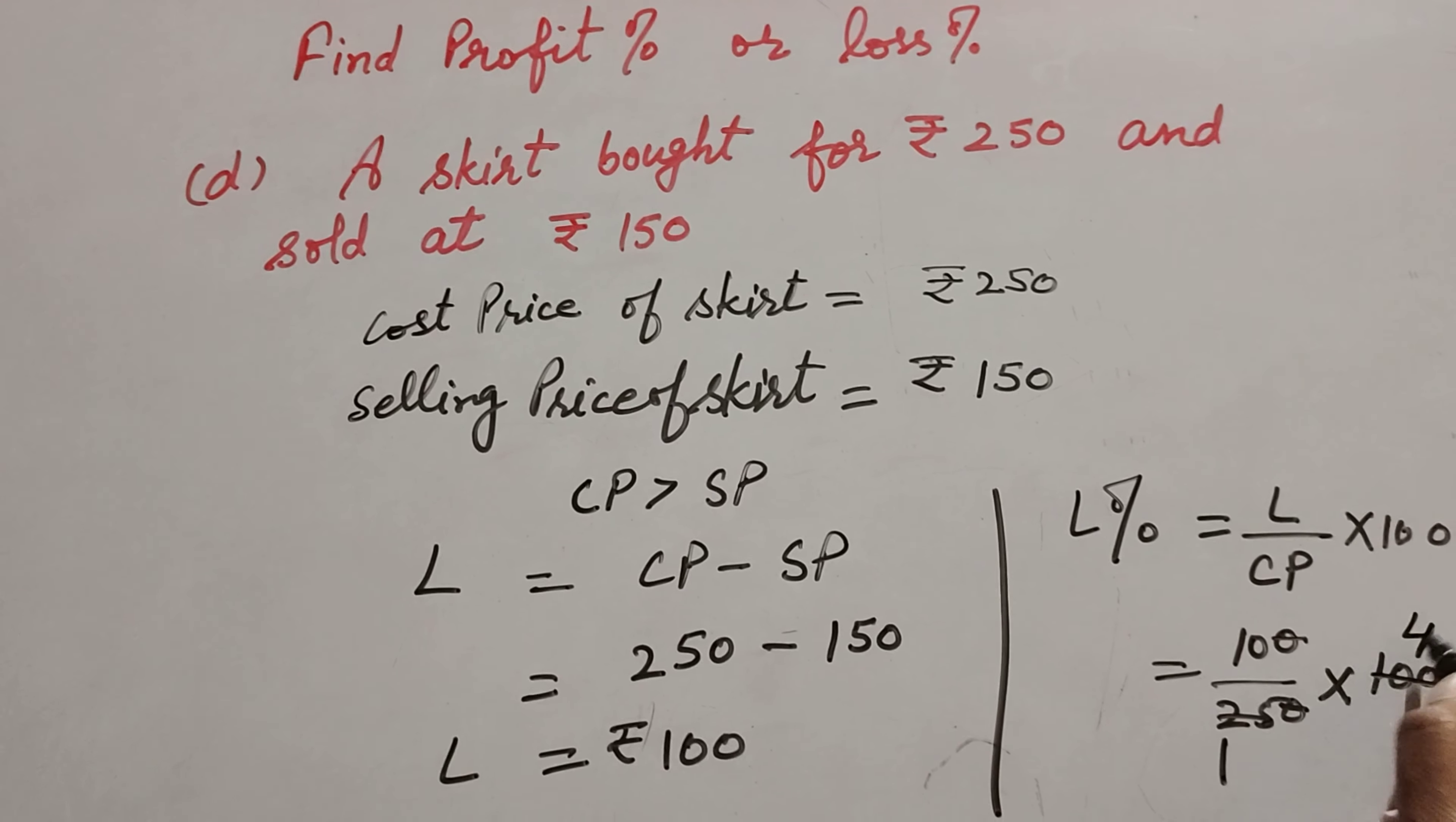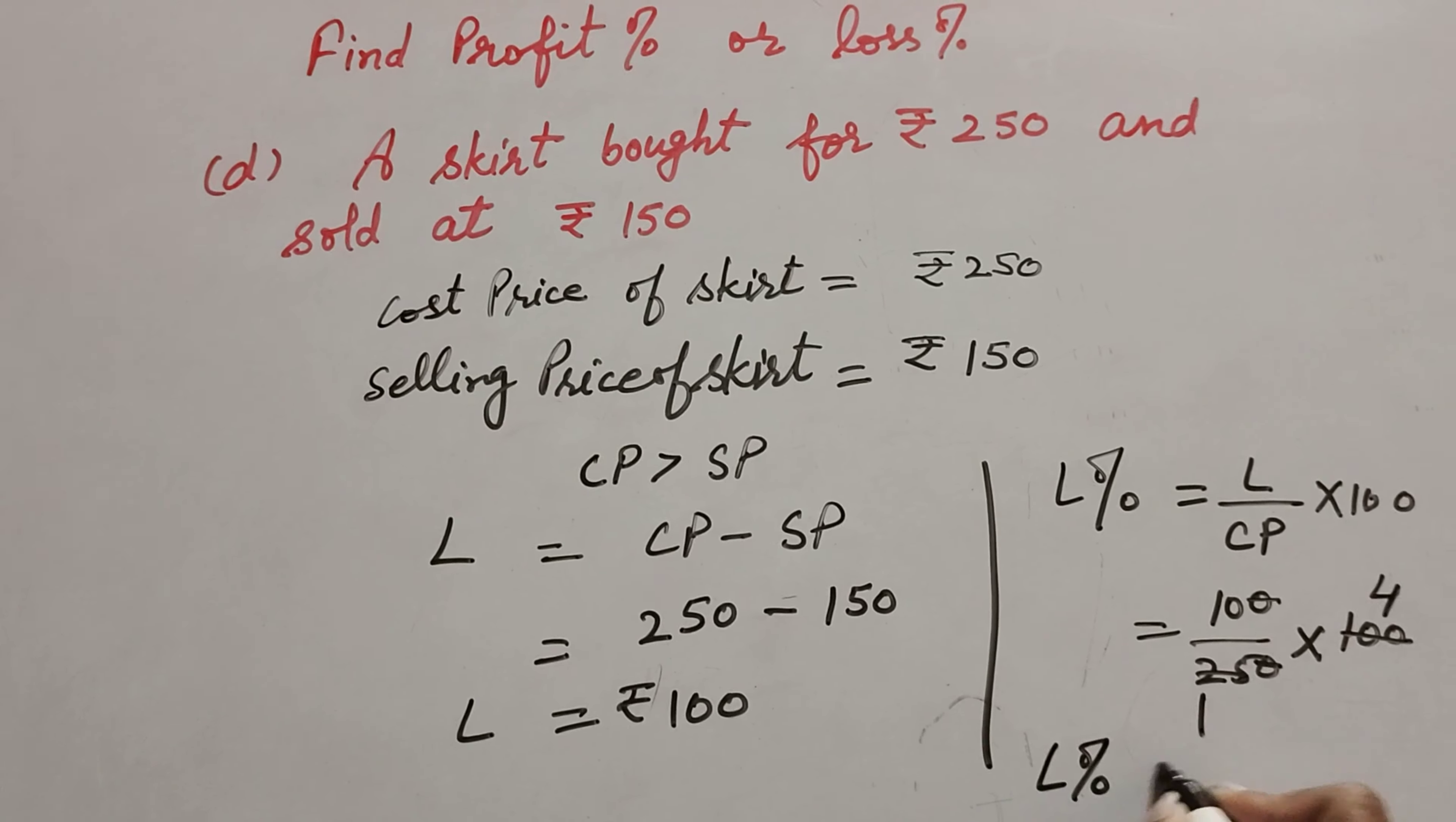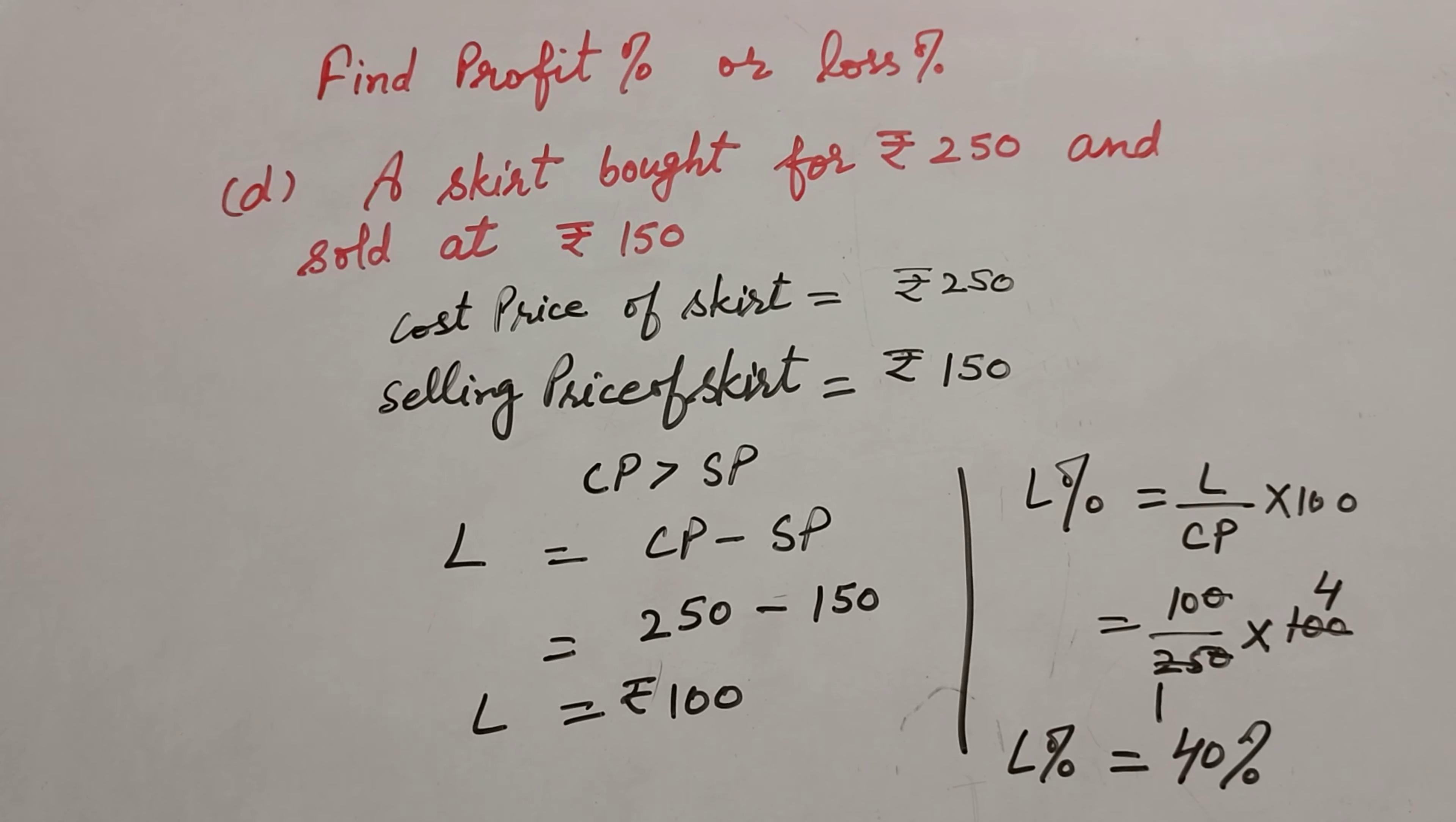Now 100 and 25 both are divisible by 25, so we cancel them. 25 ones are 25, 25 fours are 100. So loss percent is equal to 10 multiplied by 4, which is 40 percent. Thanks for watching, like and share my video, subscribe to my YouTube channel.